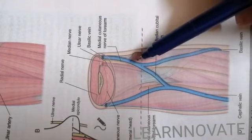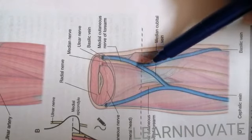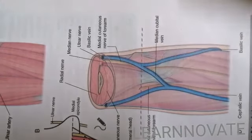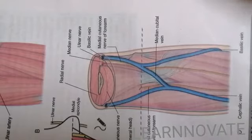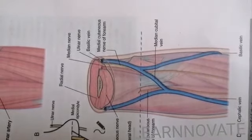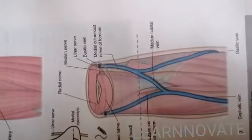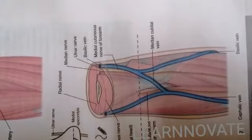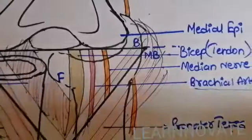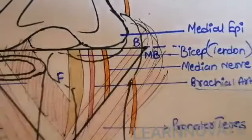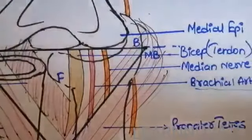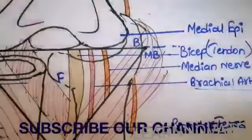This vein will cross the cubital fossa. That is why this vein is very important for venipuncture and we can use this vein for blood drainage. This was your explanation about the cubital fossa. I hope you understood well. Thank you.